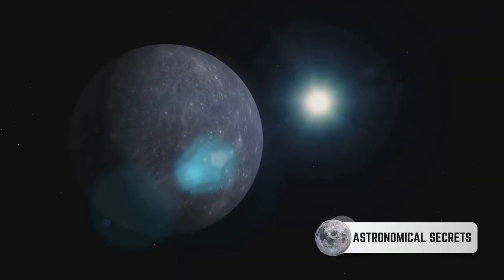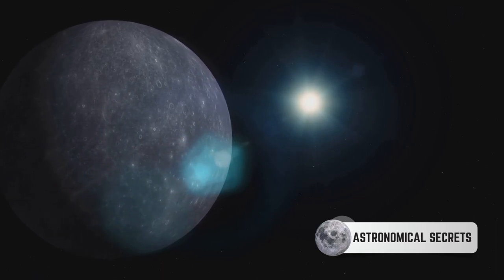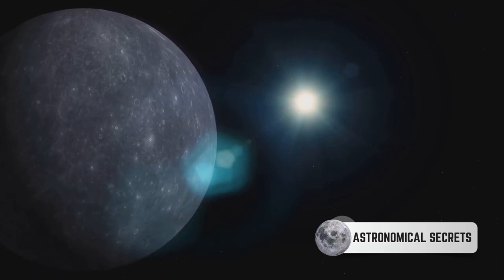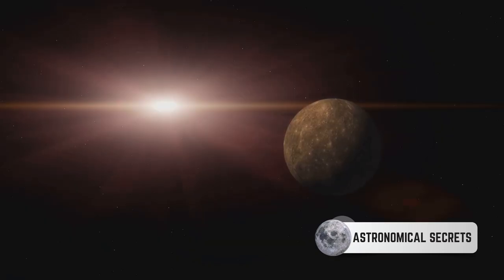Today, we're going on a journey to meet the universe's oldest survivors, the metal-poor stars. These celestial bodies are nothing short of cosmic marvels. Born from the primordial matter of the universe, they are some of the oldest known objects in existence, with ages that stretch back over 13 billion years. That's nearly three times the age of our sun.